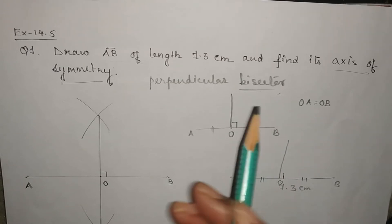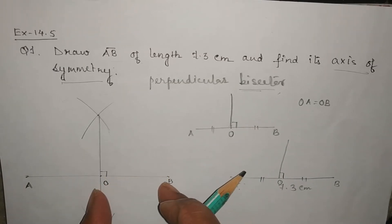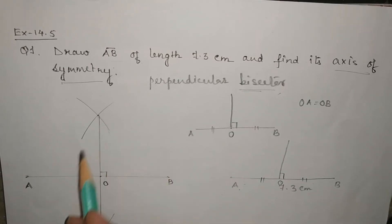Bisector means it will divide the line into 2 equal halves. So here this length and this length is equal. That means we can write OA is equals to OB.